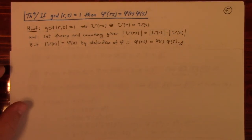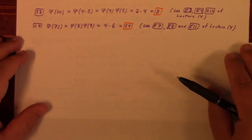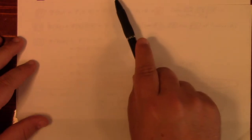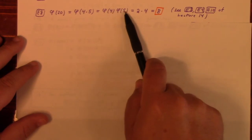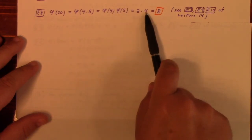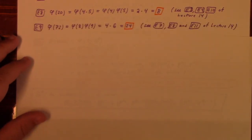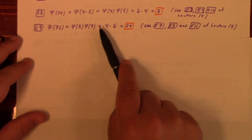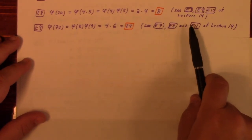Let's apply this theorem. φ(24) = φ(3) · φ(8) = 2 · 4 = 8. φ(20) = φ(4) · φ(5) = 2 · 4 = 8. φ(72) = φ(8) · φ(9) = 4 · 6 = 24. These values come from earlier examples in lecture 14.